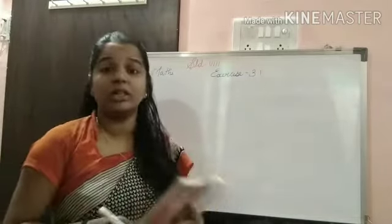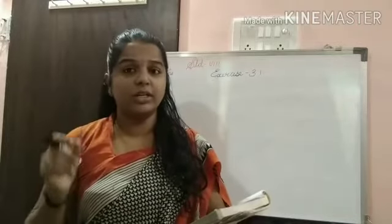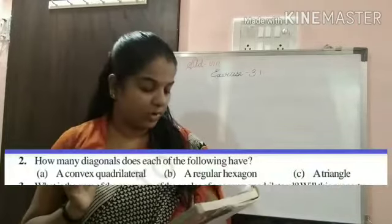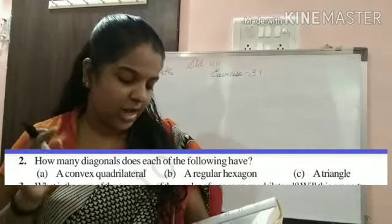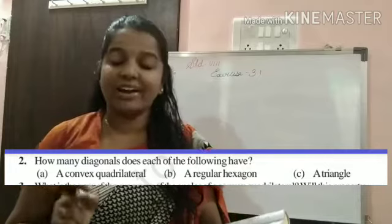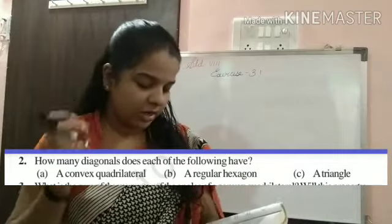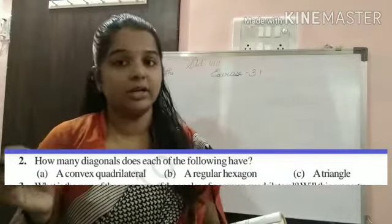Here you are going to see the number of diagonals according to the sides. So here is the question. How many diagonals does the following have? A convex quadrilateral. Quadrilateral means that have four sides, a regular hexagon and a triangle.